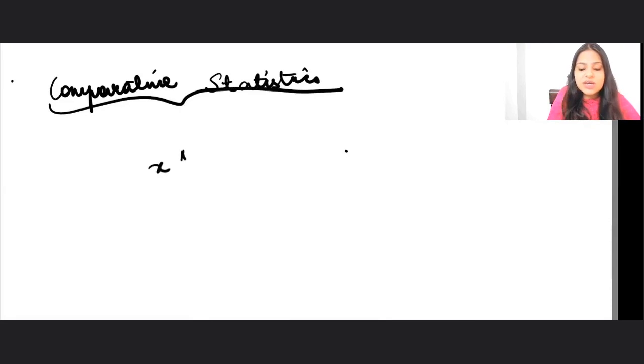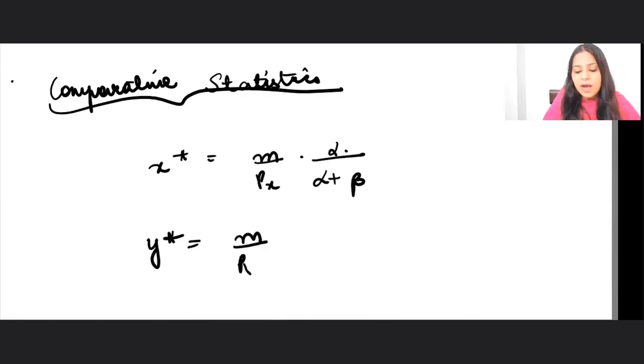What was my equilibrium for x star? It was m by px into alpha upon alpha plus beta. What was my equilibrium for y star? It was m by py beta upon alpha plus beta.